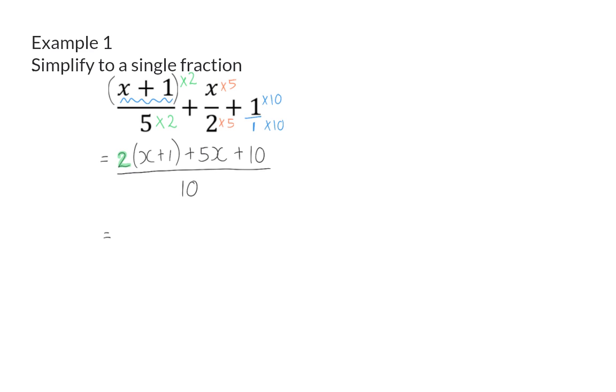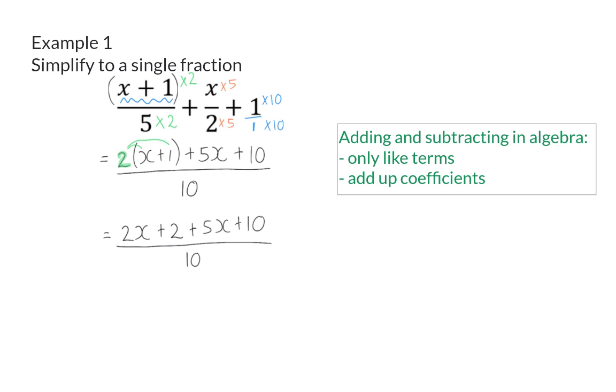Now, I can simplify the bracket by multiplying in the 2 to get 2 times x plus 2 times 1, which should now still be added to the rest of the numerator. Just a reminder that when adding and subtracting in algebra, we only add like terms, and you add by simply adding up the coefficients and keeping the variable the same.